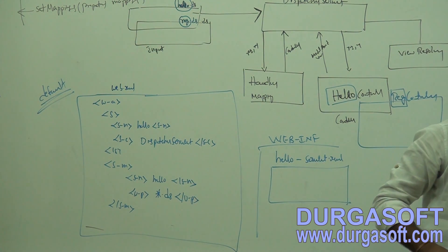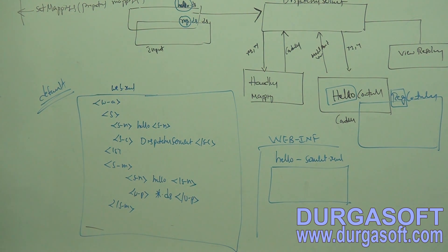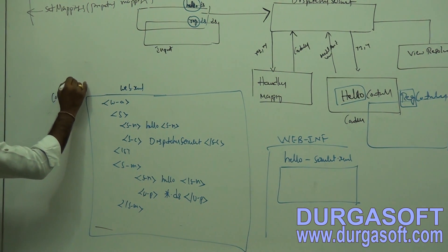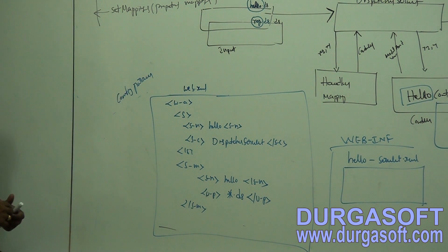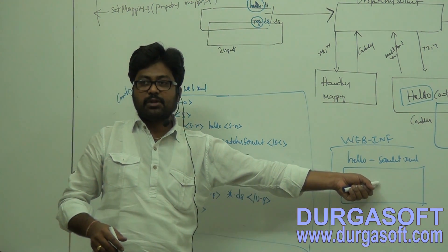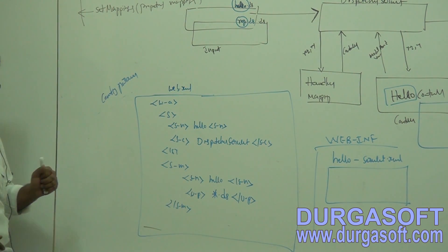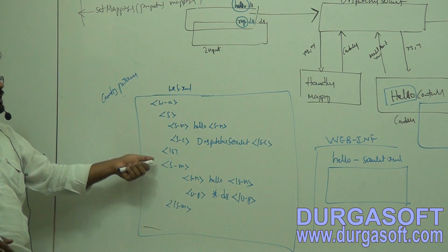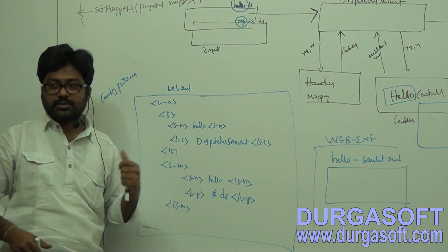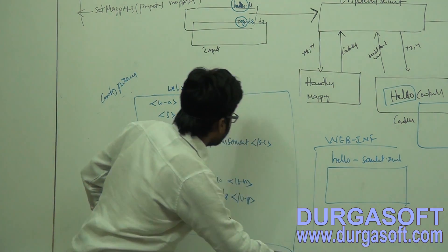In case if you want to change the location or change the file name, by using two more types of configurations you can change it. By using context parameters or configuration parameters you can change that XML file location. For a large application it can have any number of XML files - for DAO we can have an XML file, for connection pool we can have an XML file. But in case of default configuration, only one single XML file is supported. If you want to load multiple XML files from multiple locations, then you have to go through configuration parameters or context parameters.